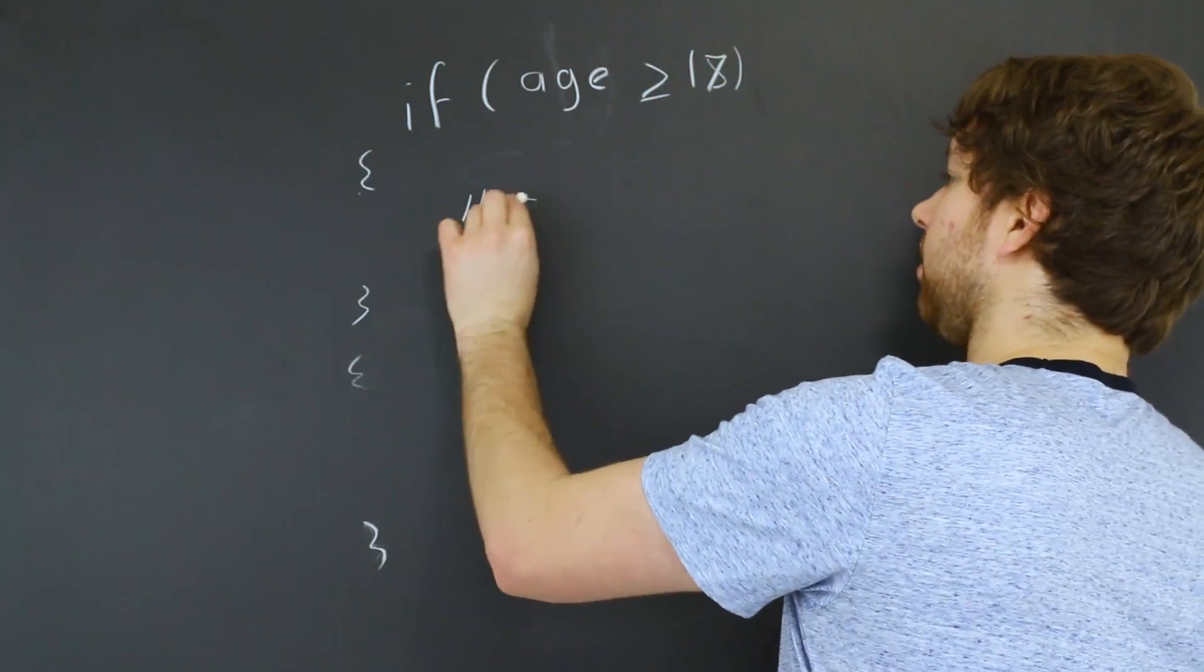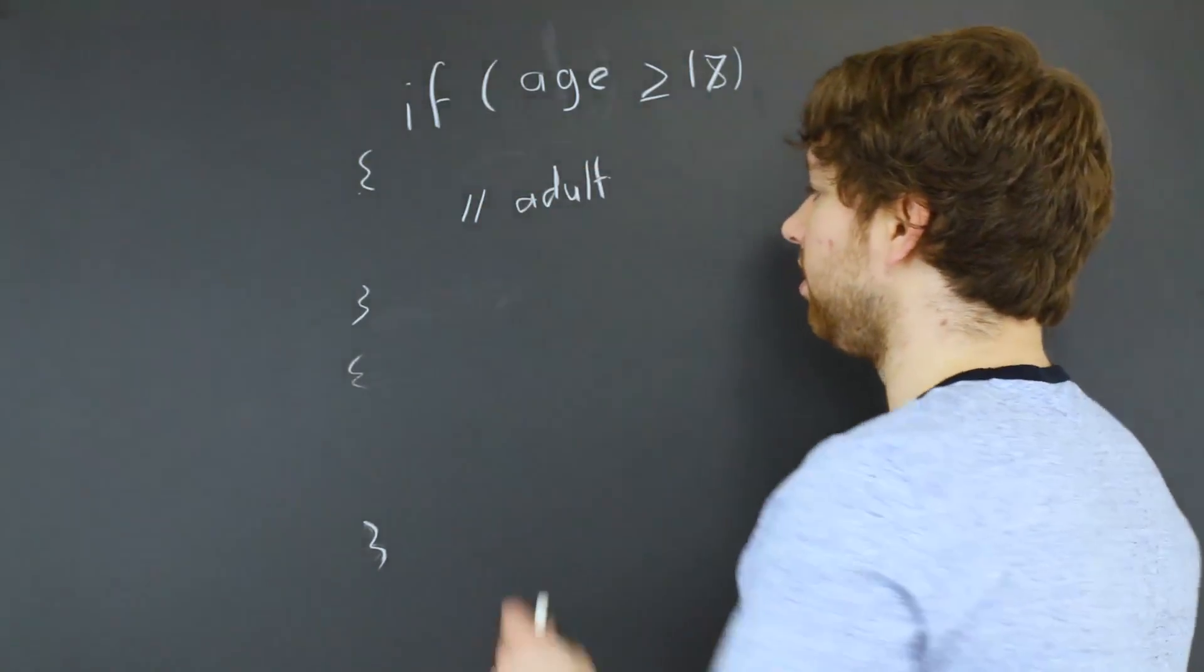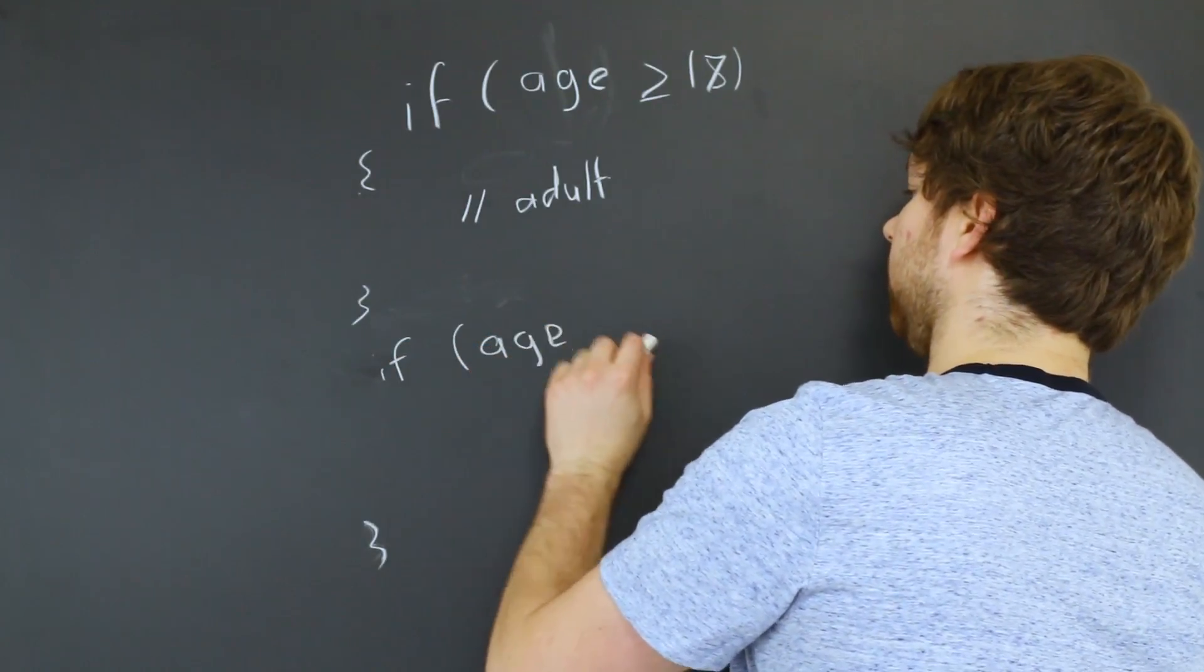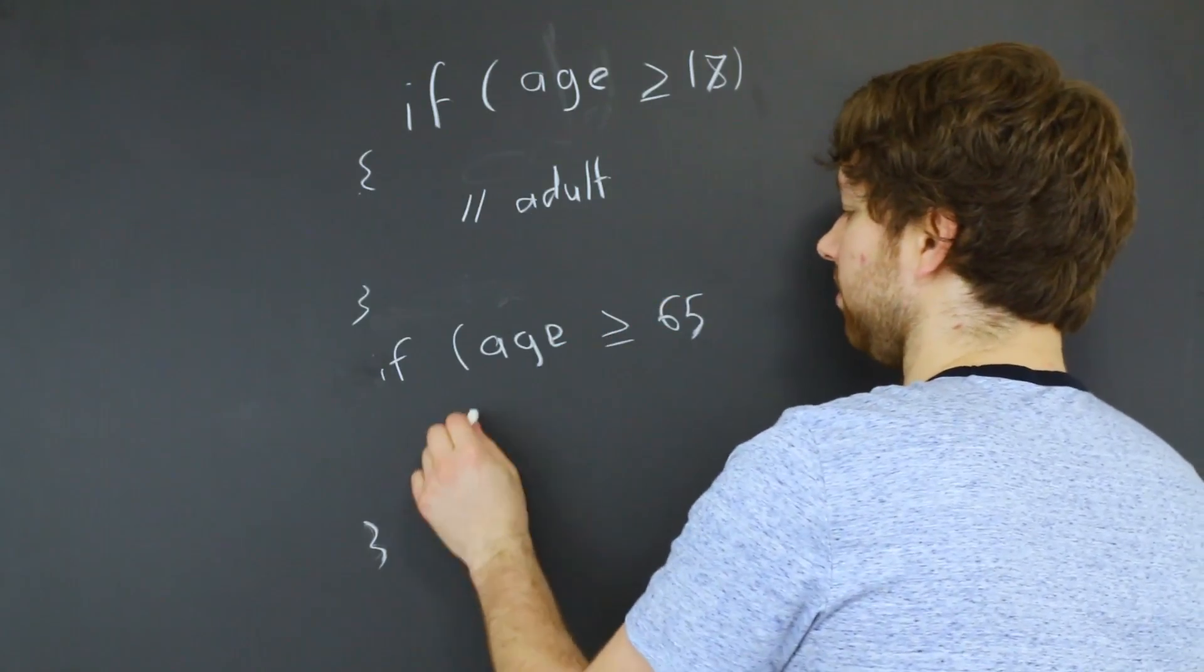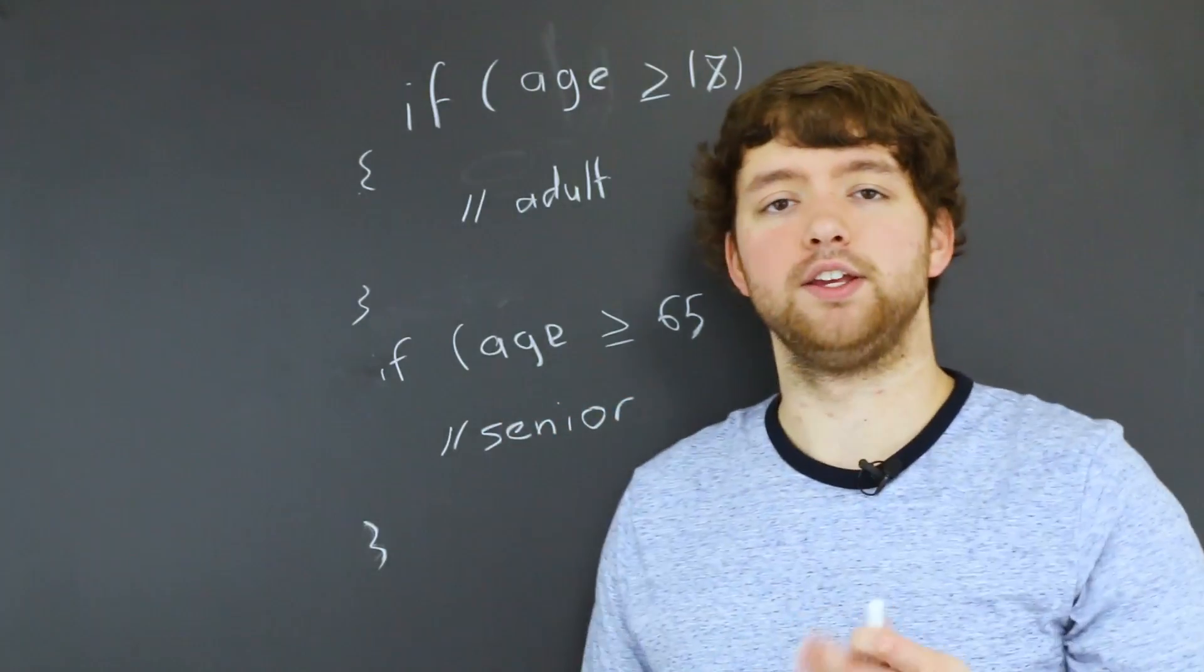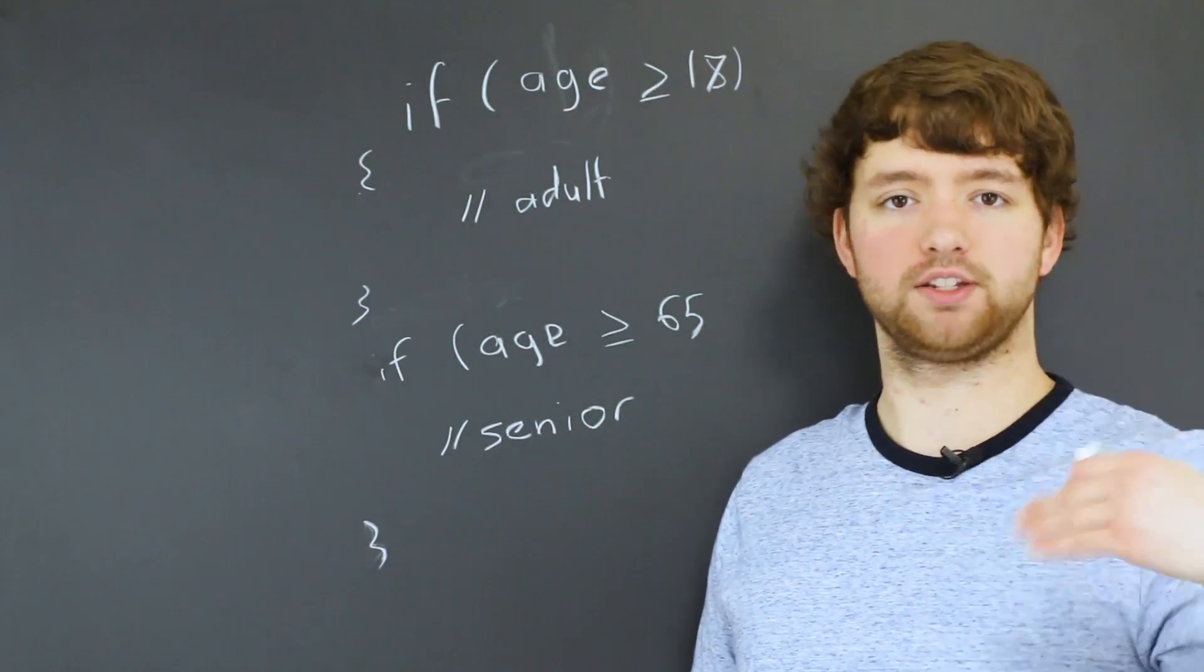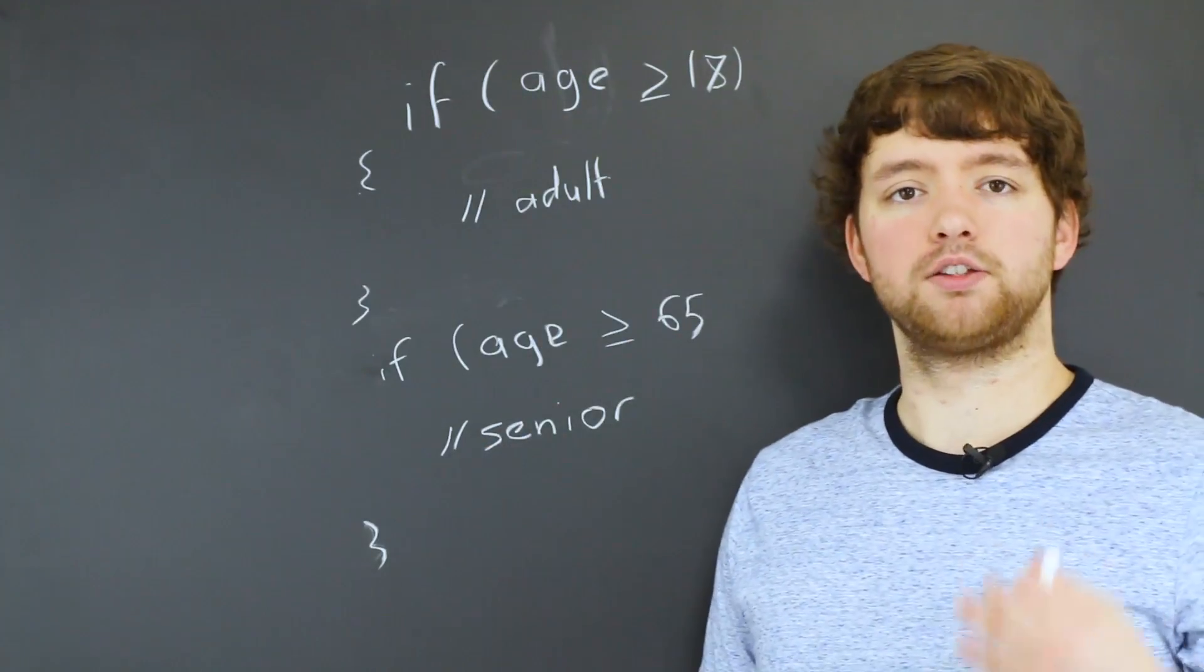Then we could have something in here that says hey this person's an adult. And then if we had a second if statement where we have if age is greater than or equal to 65, well now this person is a senior. The way this is structured is if somebody is a senior, both of these are going to be true, which is technically true because if you are 65 you are also over the age of 18.